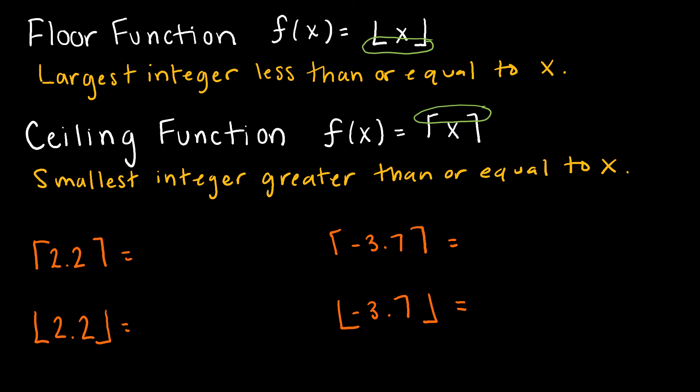Let's take a look at an example. I've got 2.2, and if I'm thinking about 2.2 on a number line, then I'm thinking about 2 and then 3, and 2.2 is right around somewhere in there. If I'm using the ceiling function, it says round up to the next integer, and the floor function says round down to the next integer.